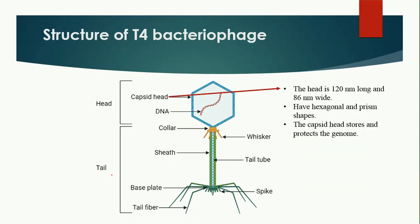In the head region, two components are present: the capsid and the DNA. The capsid is the outer layer made up of specific proteins. It is 120 nanometers long and 86 nanometers wide, and it is hexagonal or prism-like in shape — 'hexa' meaning six corners. The purpose of the capsid is to store the DNA or genomic material.